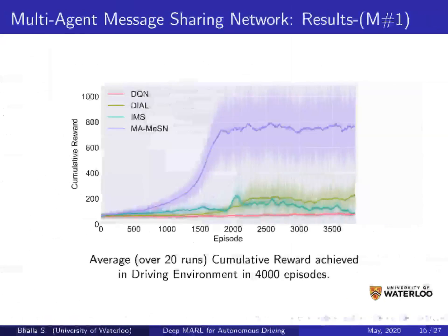Comparing MAMSN with Dial, IMS, and single-agent DQN: single-agent DQN is flat because it cannot converge in a multi-agent environment due to a non-stationary transition matrix. Dial and IMS achieve better scores than DQN in the treadmill driving environment; however, IMS fails to converge and actually diverges. Dial achieves a much better cumulative reward than IMS and DQN, and our algorithm MAMSN achieves the best cumulative reward of all.